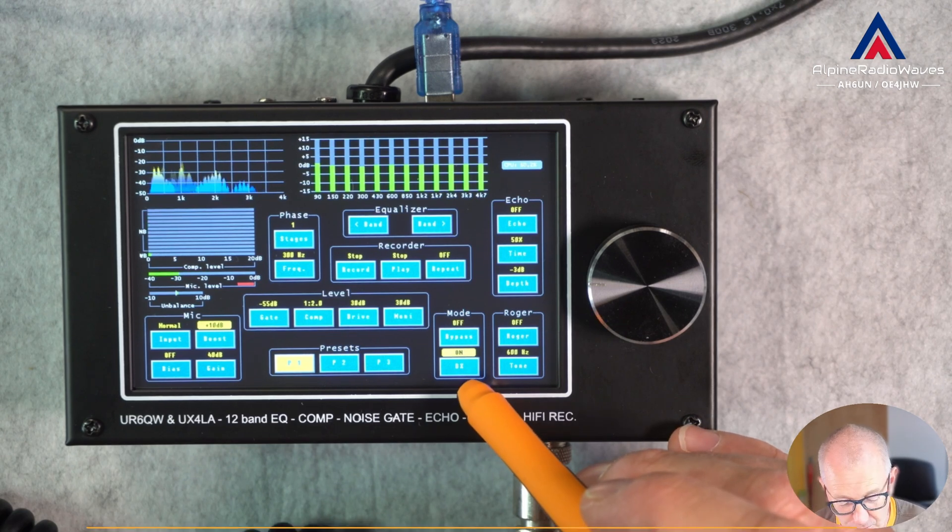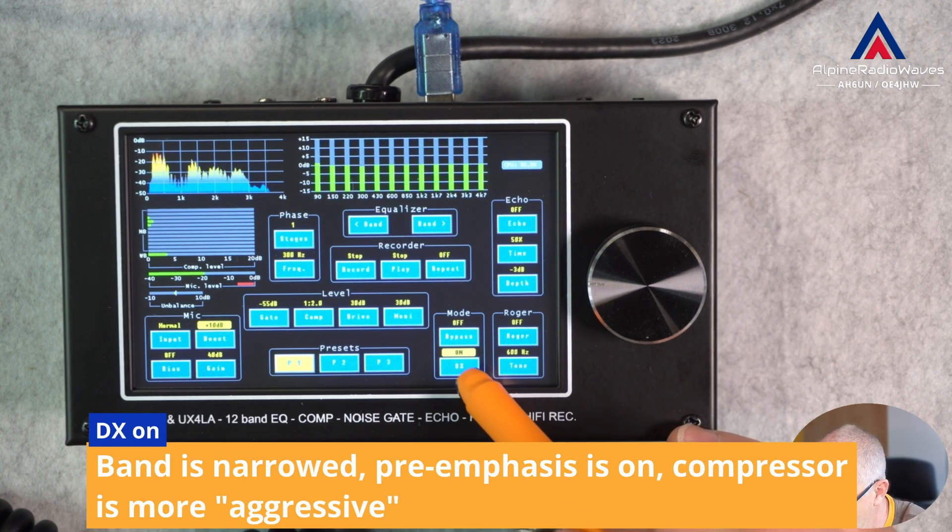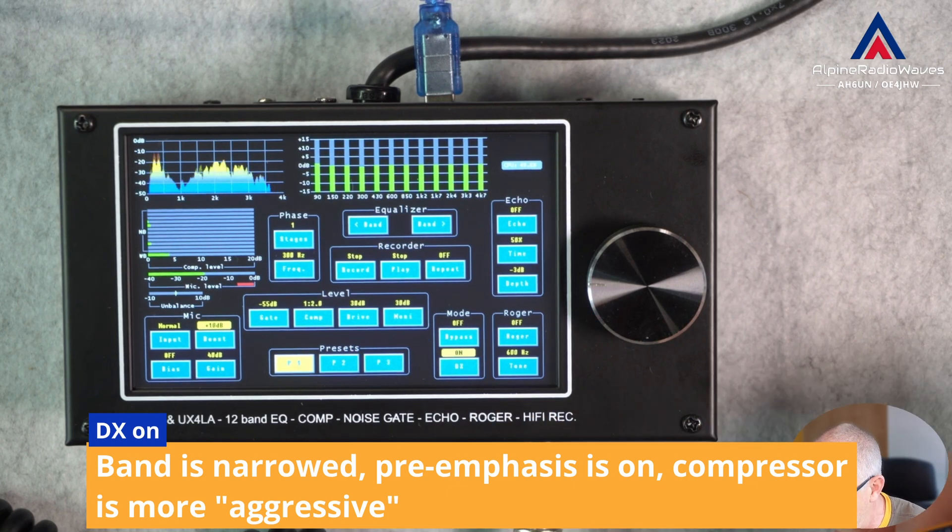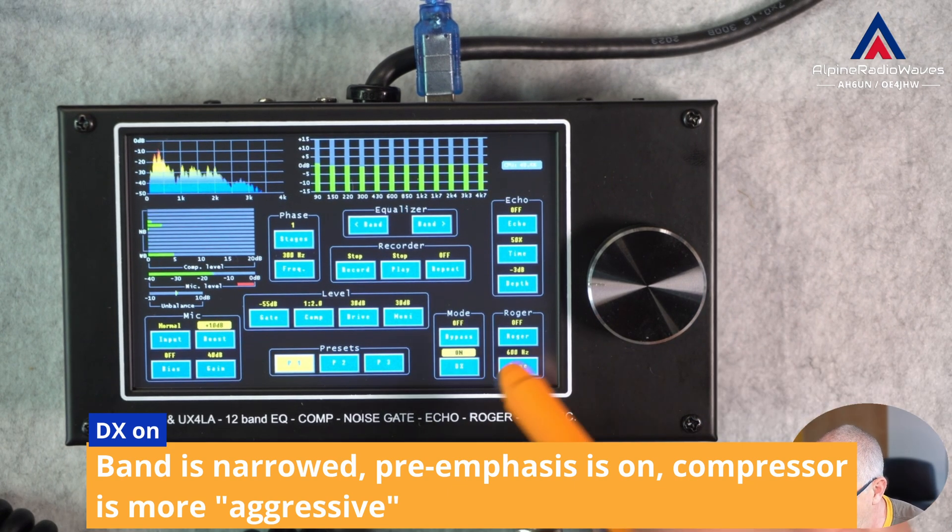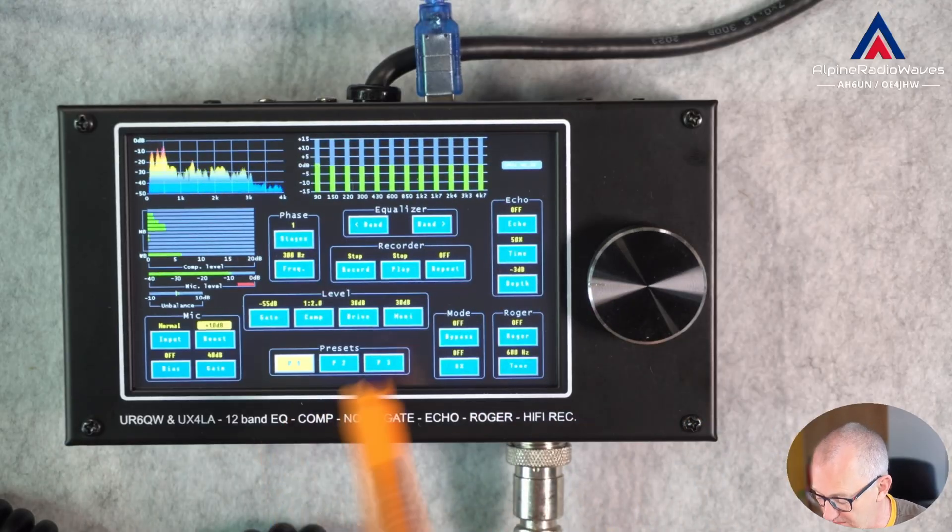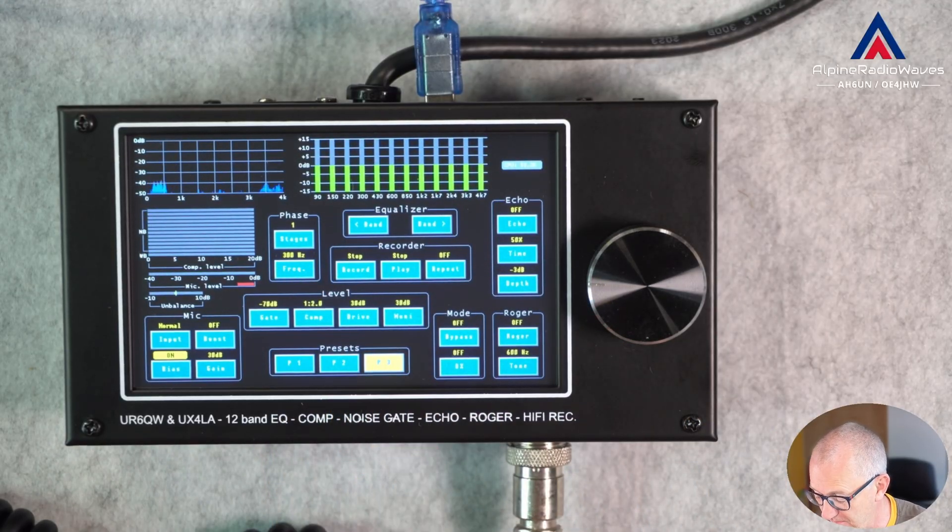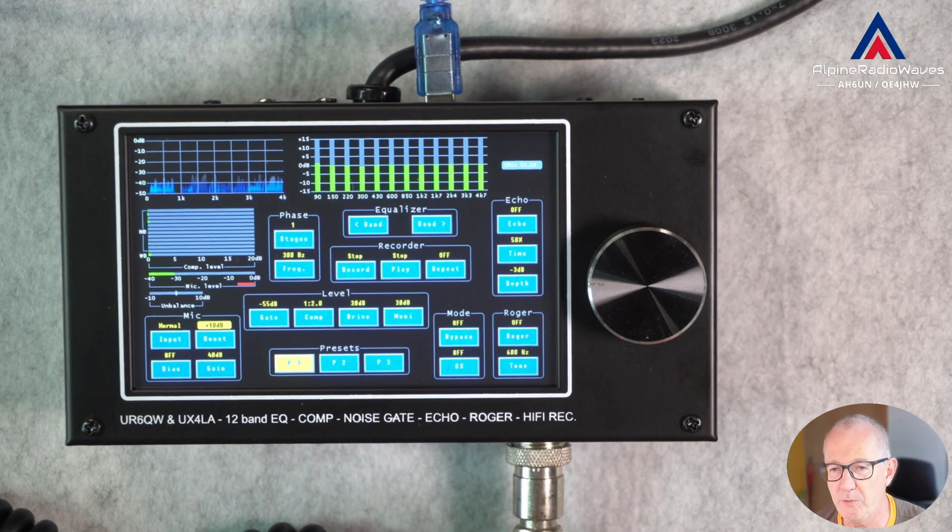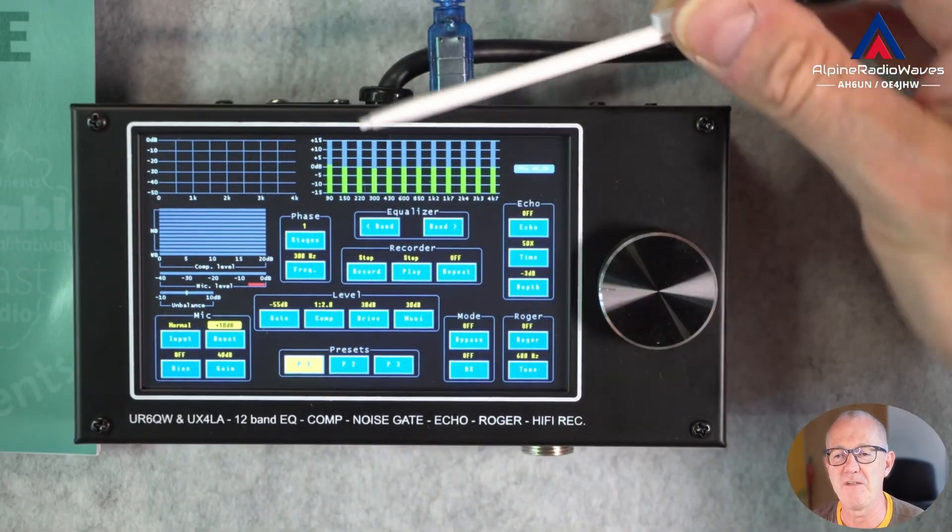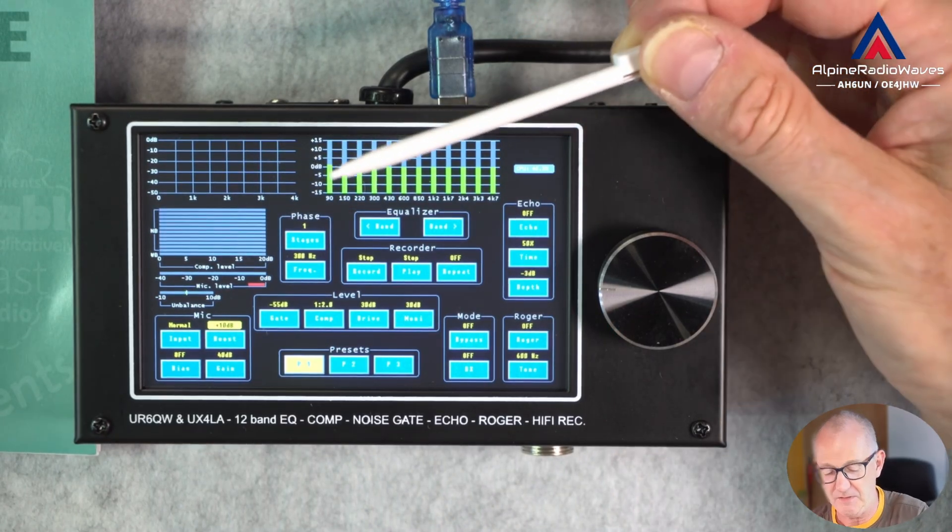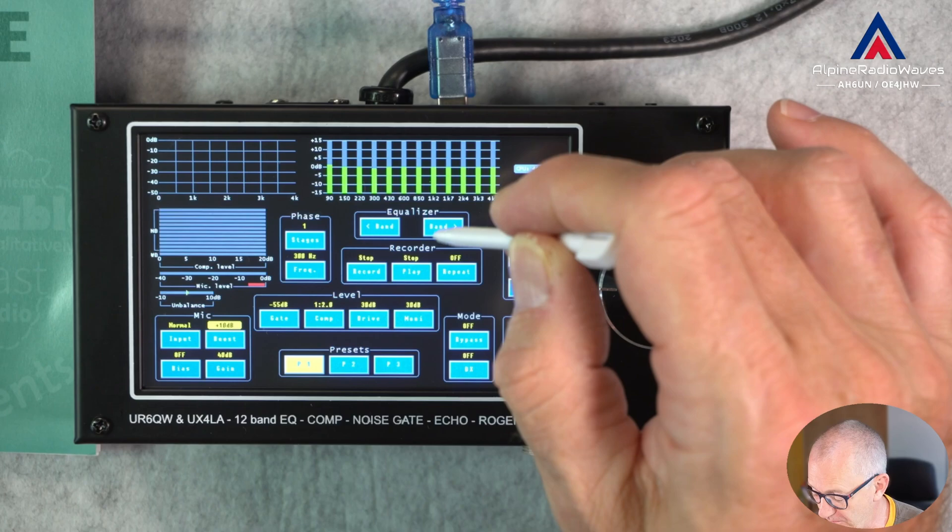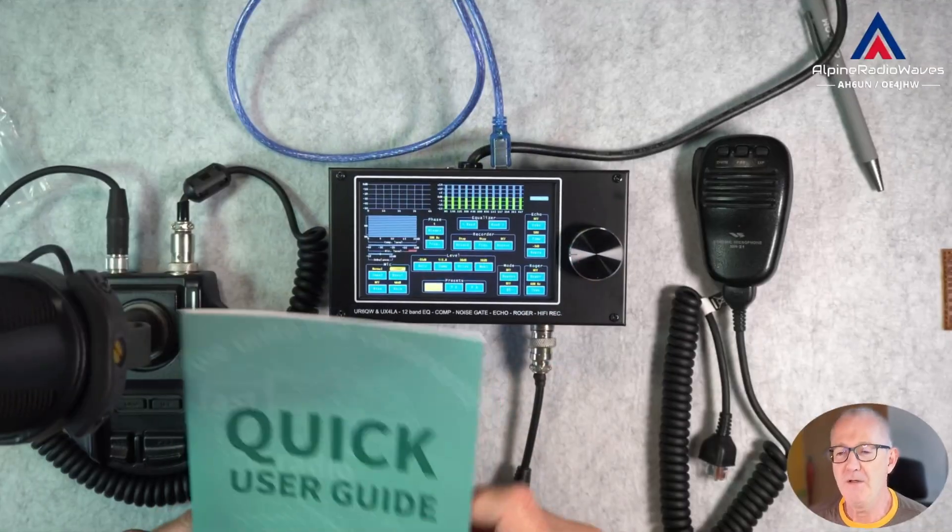So, according to the manual, if you switch it to DX mode, everything is a little bit more aggressive, let's say. And at the bottom, you can set three presets. I forgot to show you, there is also this little stylus inside the box together with the USB cable. So, that's very convenient, of course.